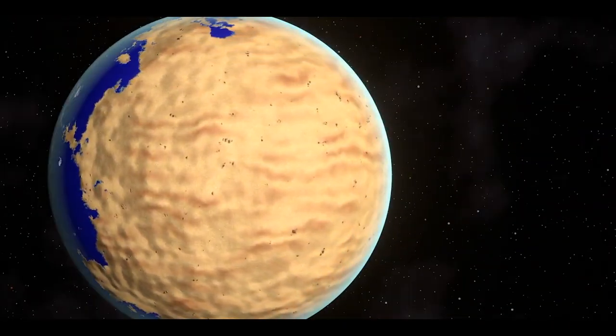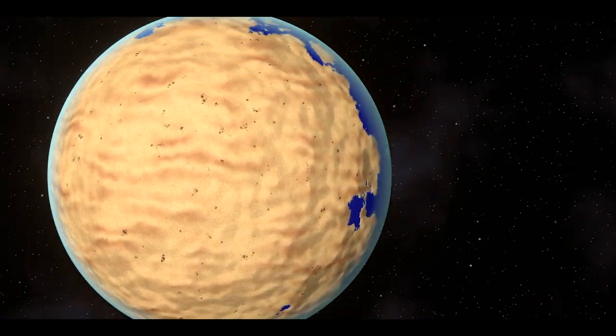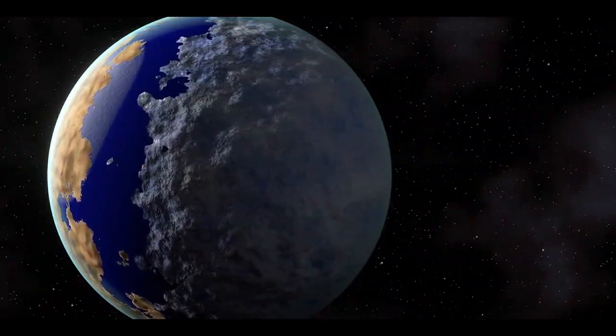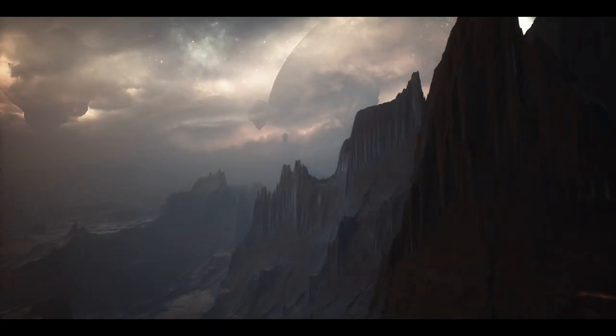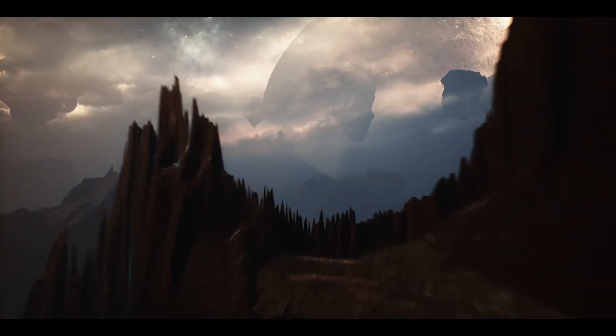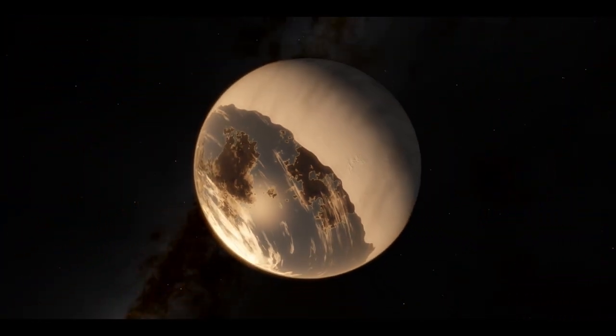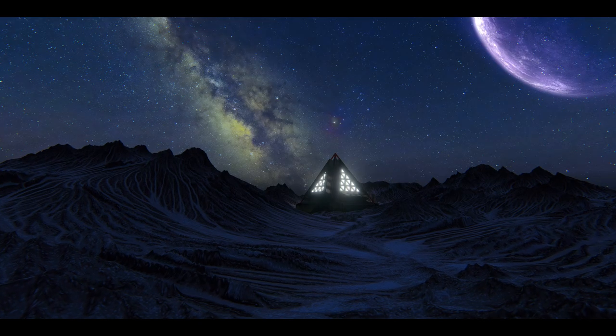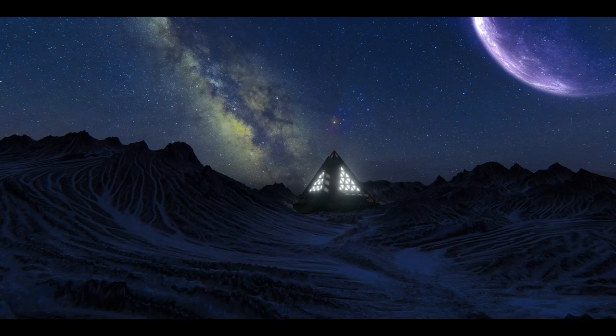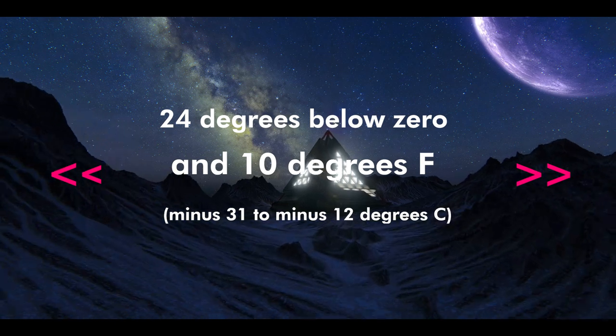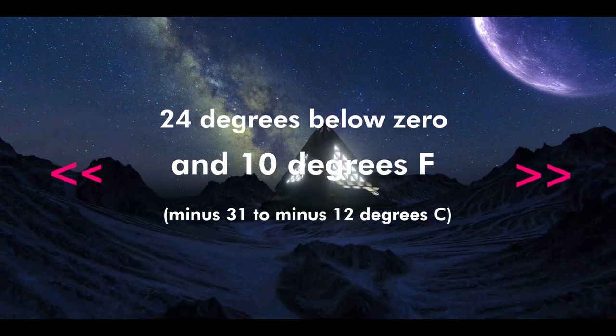The planet is tidally locked to its star so that one side basks in perpetual daylight and the other remains in darkness. The locked configuration stabilizes the surface climate of the planet. Depending on the side facing the Sun and the side facing the dark side, the average surface temperature may vary between 24 degrees below zero and 10 degrees Fahrenheit, minus 31 to minus 12 degrees Celsius.